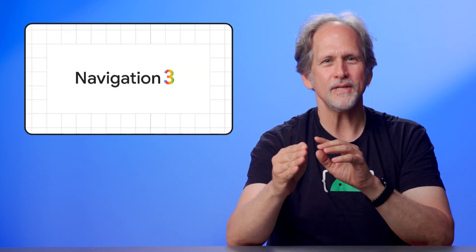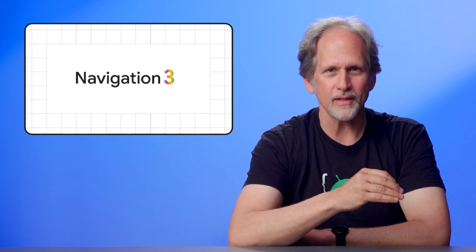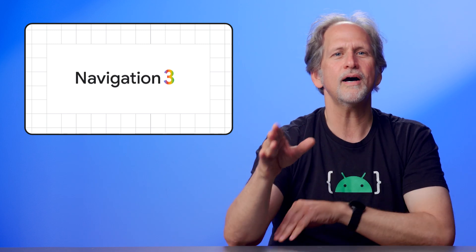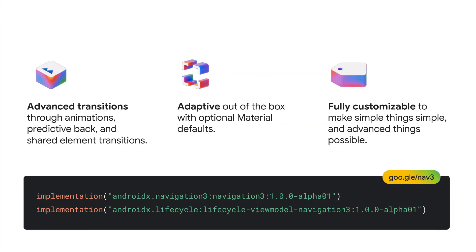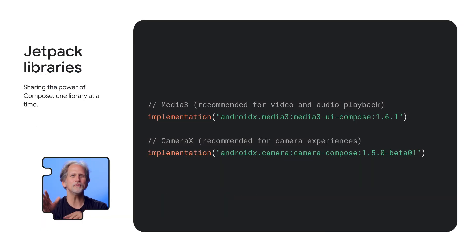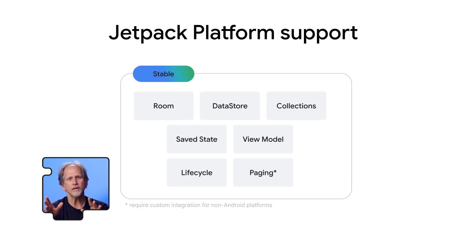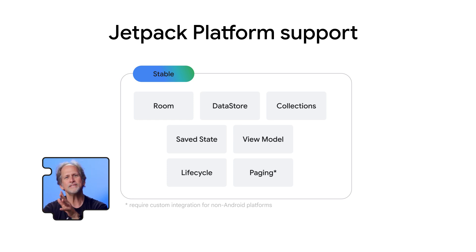We've also got library updates. The new Navigation 3 library is built on a flexible, customizable layered architecture that supports adaptive layouts out-of-the-box, makes it easy to add animations between screens, implement predictive back, and create shared element transitions. By popular demand, we've added Compose support to CameraX and Media3, and are continuing to advance support for business logic sharing in Kotlin Multiplatform, with KMP support now in Save State, ViewModel, Lifecycle, and Paging.